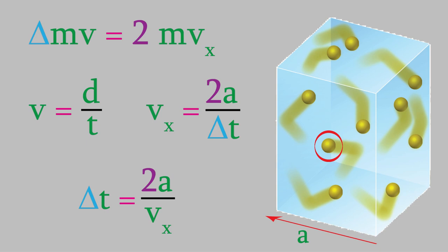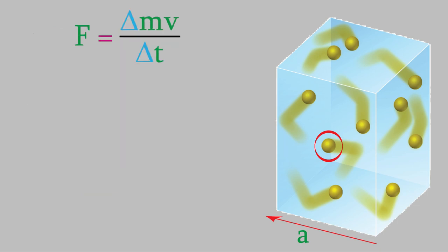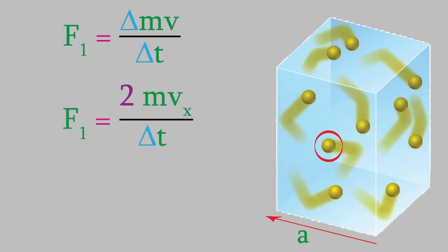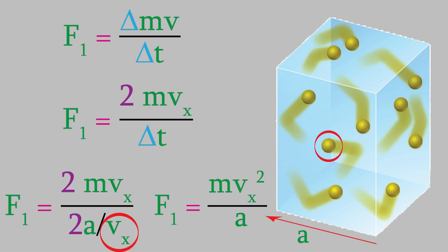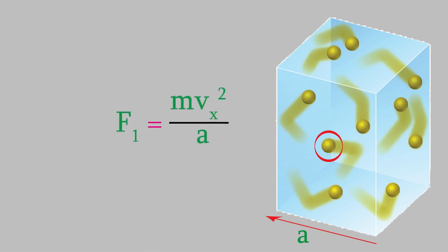Let's use what we just learned in our equation for force. The force exerted by one molecule, F1, has the change in momentum in the numerator — which equals 2mvx — and the change in time in the denominator — which equals 2a over vx. We can simplify: the 2s cancel out, and vx from the denominator moves to the numerator, giving us m times vx squared divided by a, the length of the box. That's the force exerted by one molecule on the back wall of the container.